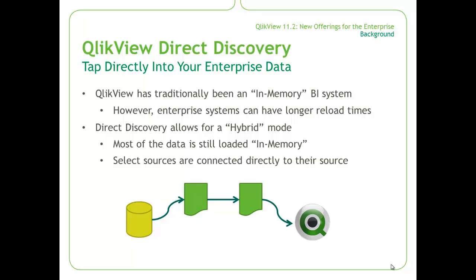Direct Discovery is different — it allows for a hybrid mode. Most of the data is still loaded in memory and has the proper associative experience that ClickView is known for. However, select sources are connected directly to their source, so as you update your database with new information, it's brought directly into ClickView. Now let's get into a demonstration.